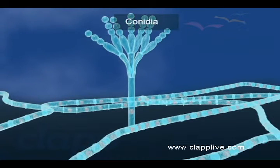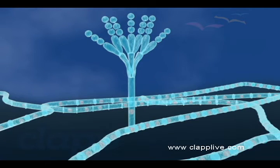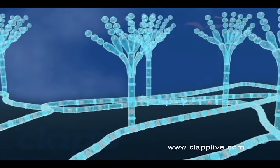Cornidia are produced in chains from the tips of sterigmata by mitosis and are almost green in colour.